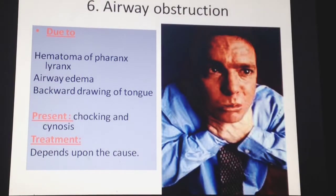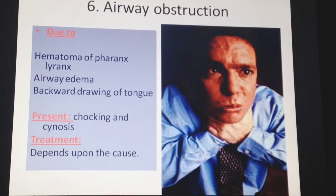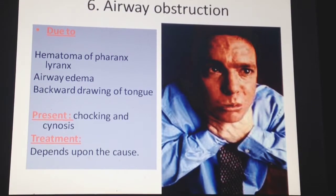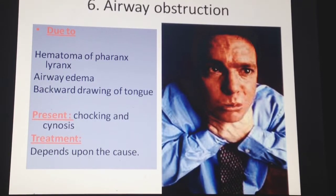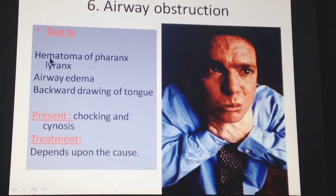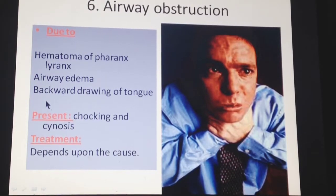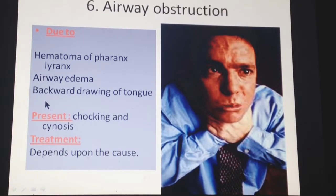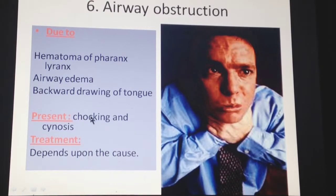Another immediately life-threatening condition is airway obstruction, which can be caused by a hematoma of the pharynx or larynx, airway edema, or backward displacement of the tongue. The patient presents with stridor, choking, or cyanosis. Treatment depends on the cause: drain the hematoma if present, administer steroids for airway edema, and perform a jaw-thrust maneuver or manually reposition the tongue to relieve stridor caused by tongue displacement.